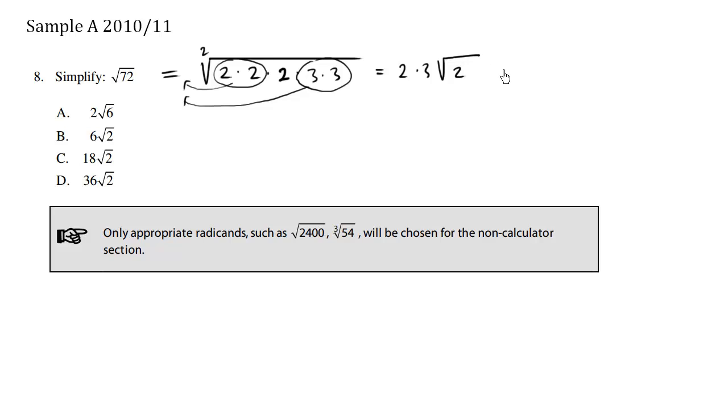So this here is equals to 2 times 3 is 6. And then 6 root 2 is the final answer. So choice B is the correct answer.